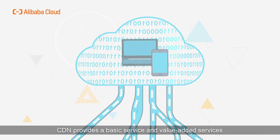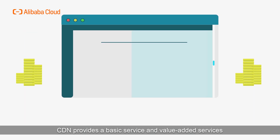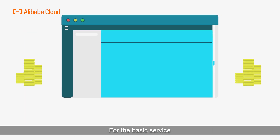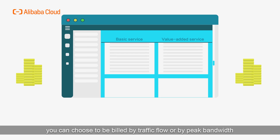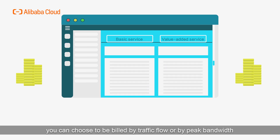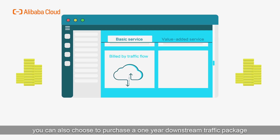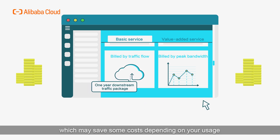CDN provides basic services and value-added services. For the basic service, you can choose to be billed by traffic flow or by peak bandwidth. If you choose the traffic flow billing method, you can also choose to purchase a one-year downstream traffic package, which may save on service costs depending on your usage.